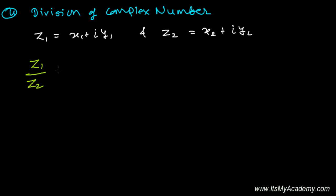For this I'm taking an example. z1 is one complex number which is x1 + iy1, and I have another complex number z2 which is x2 + iy2. Now I want to find out the division of these two complex numbers.